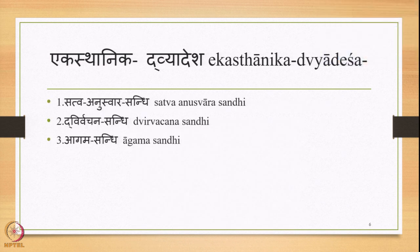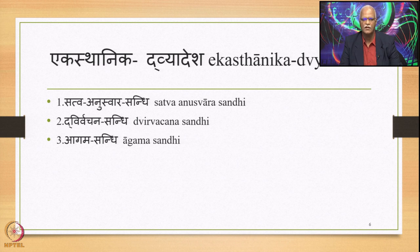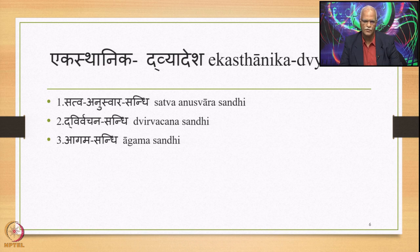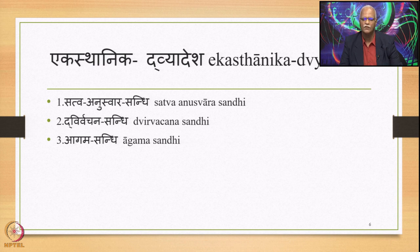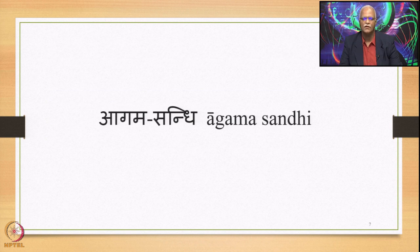There are three instances of Ekasthanika Dvyaadesha: Sattva Anusvara Sandhi, Dvirvachana Sandhi, and Agama Sandhi. We have already studied Dvirvachana Sandhi. In this lecture we will focus on Agama Sandhi. Sattva Anusvara Sandhi will be dealt with in the next lecture, as it is linked with the Visarga Sandhi chapter.